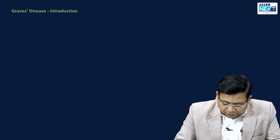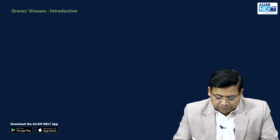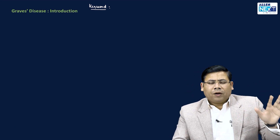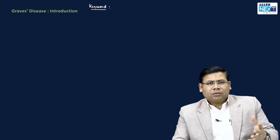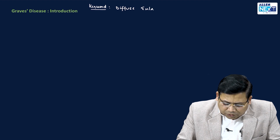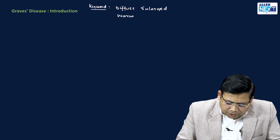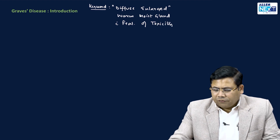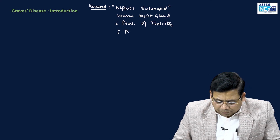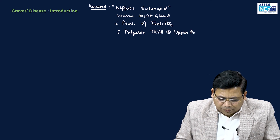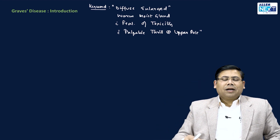When we talk about Graves disease, it is very important to understand its basic concept. There are certain keywords of Graves disease from where you will actually answer the question within just one minute. You read a few lines, see the options, and you can mark easily. The keywords are: diffusely enlarged, warm, moist gland with features of toxicity — meaning features of hyperthyroidism — and with a palpable thrill at the upper pole.